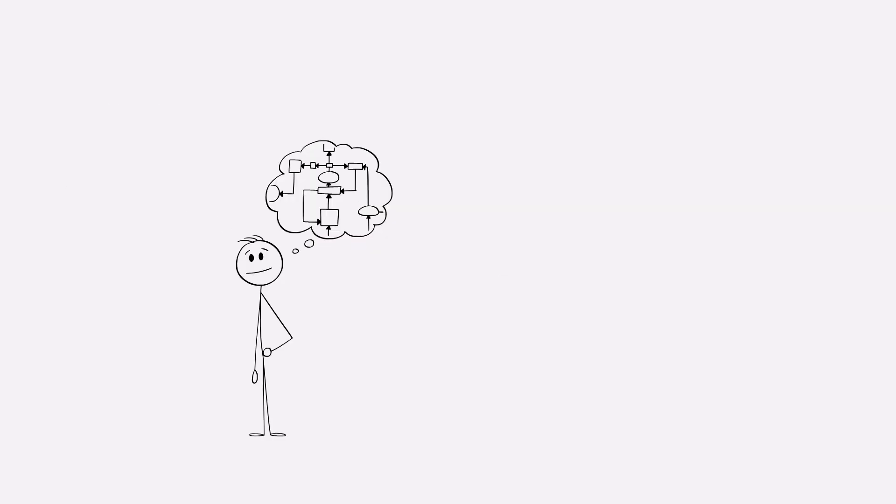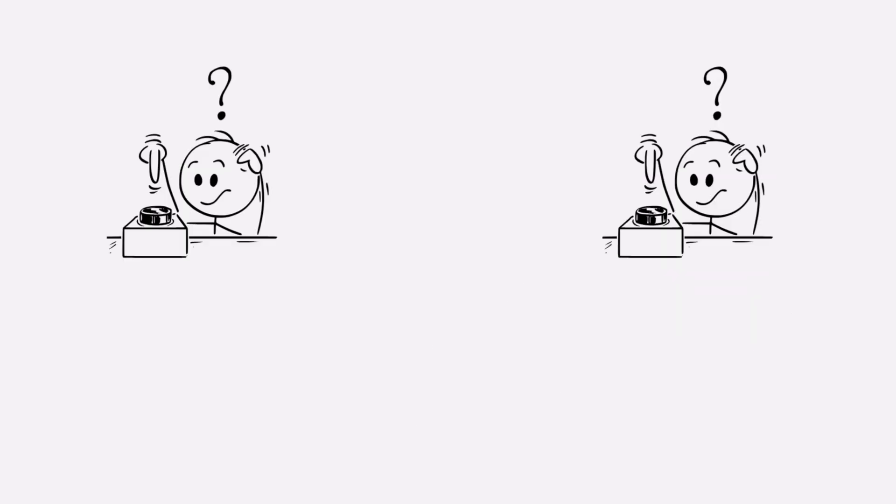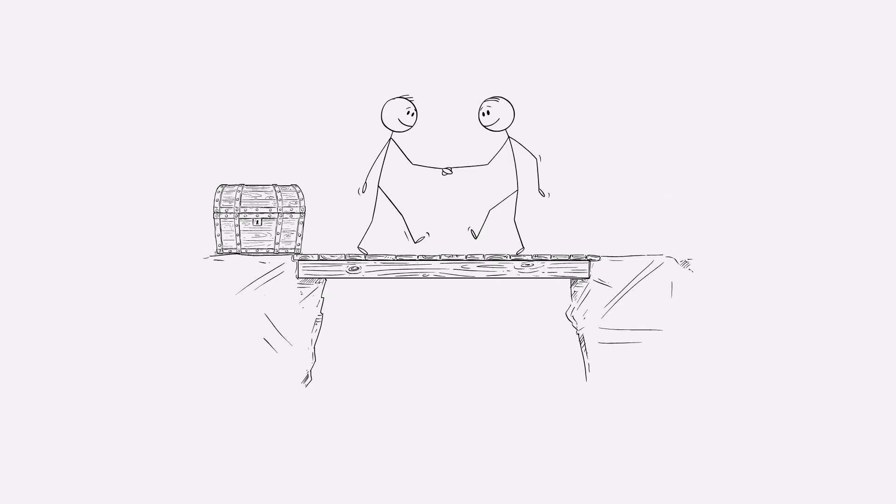The most rational thing to do would be to betray, because this guarantees your freedom and you have no control over the other person's decision. So both betray and neither are released, hence cooperating would have been the better option, even if not the most rational.